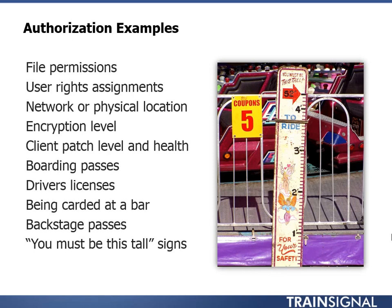Encryption is also a common method of authorization. You can encrypt a file and put it out on the public internet, and nobody will be able to read it unless they have a decryption key. You control authorization by granting that key to specific individuals. In enterprises, they often don't want computers connecting to their network unless proven to not have any malware. When a client computer connects, it sometimes has to run a health check, and if it has all the latest updates and is running anti-malware, it's granted access.